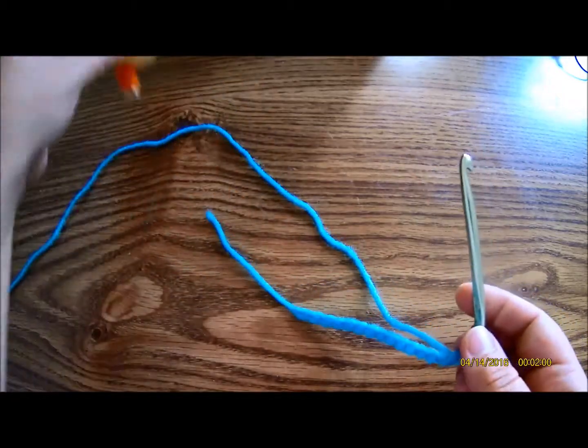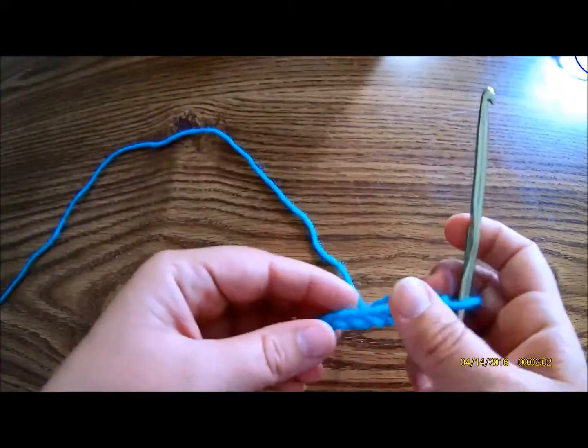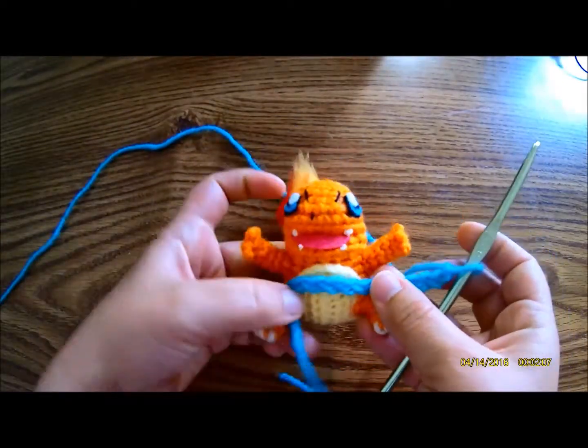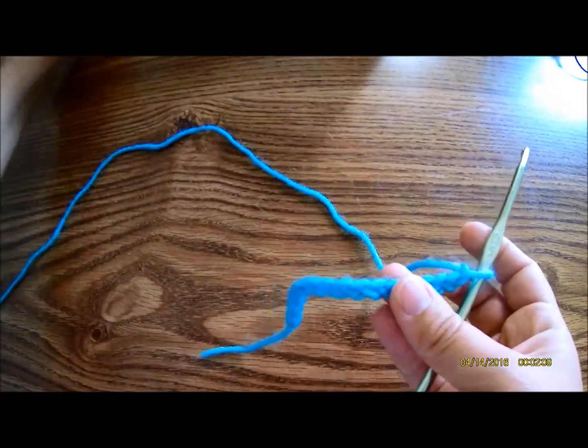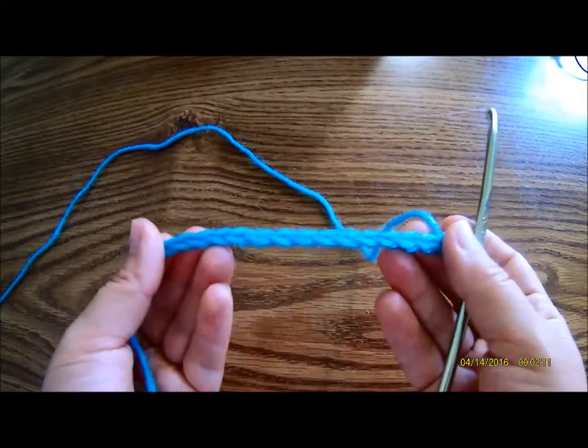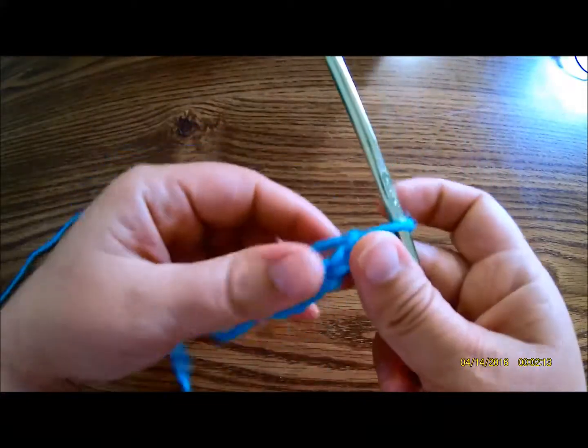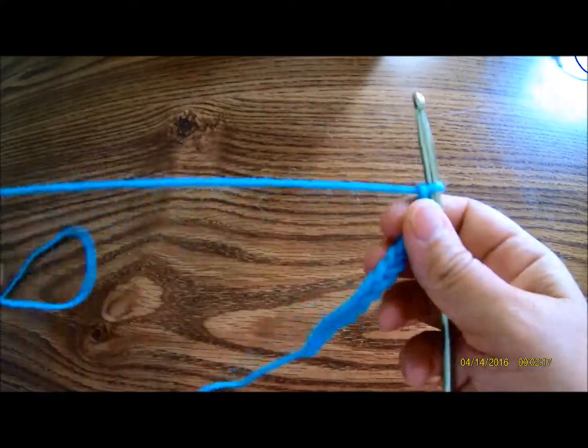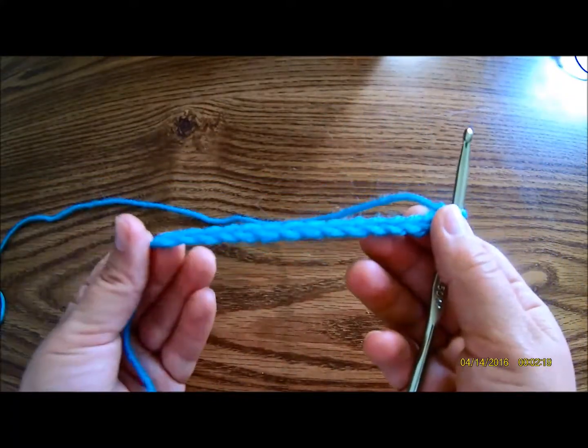And to make baby shoes, or if you were going to make like a little shirt, you would use, start with a foundation chain to make clothes. Any type of clothes you would be wanting to make, start with a foundation chain. Any of the baby dresses I've made, I start with a foundation chain.